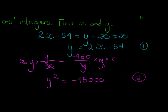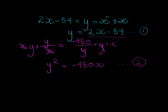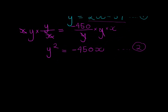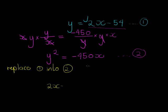In this equation I see I can replace y. Y can be replaced with 2x minus 54. So from here I can replace equation 1 into equation 2 and that gives me (2x - 54) squared is equal to -450x.